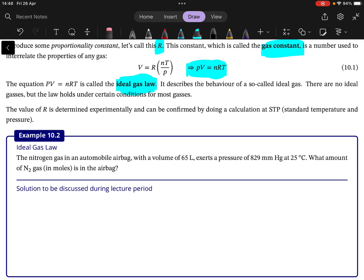So let's look at an example of just using the PV is equal to nRT. It says nitrogen gas in something with a volume of 65 liter, a pressure of that and the temperature of that. What amount of gas do we have?